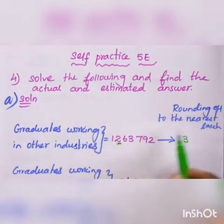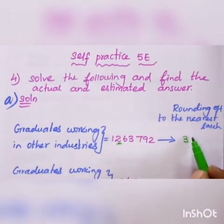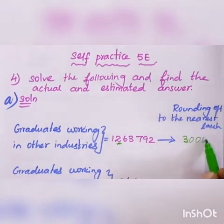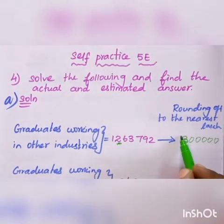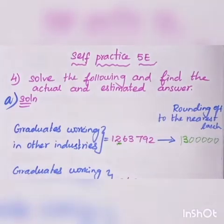You can see this is a five-digit number, so put five zeros: 1, 2, 3, 4, 5. This is number one. So the rounded value is 13 lakhs.